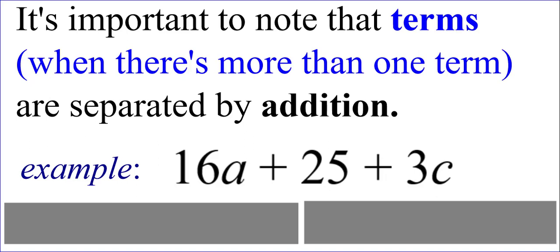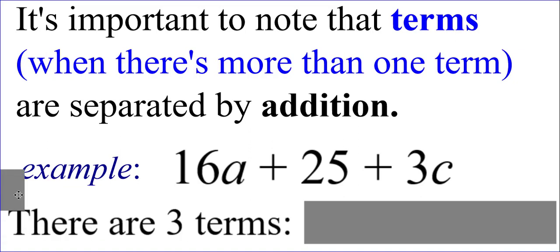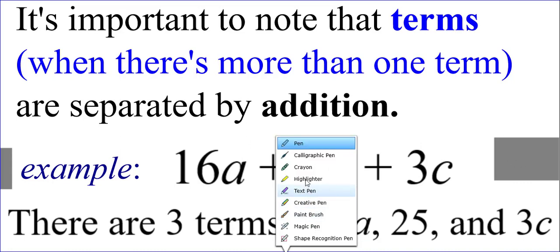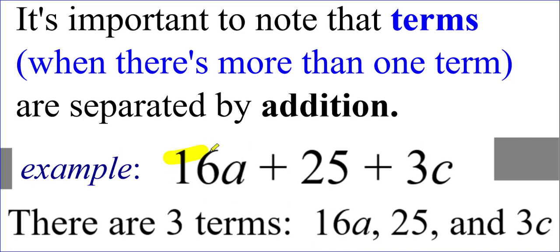It's important to know that terms, when there's more than one term, are separated by addition. For example, with the expression 16A plus 25 plus 3C, who are the terms? Well, there are three terms total, and those terms are 16A, 25, and 3C. Notice we're talking about the terms that are separated by addition: 16A, 25, 3C.